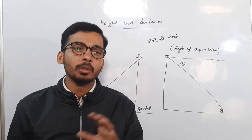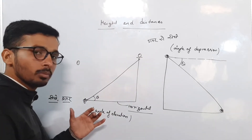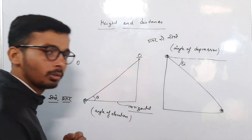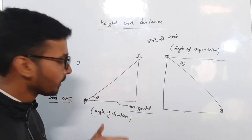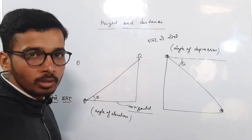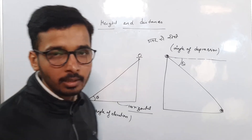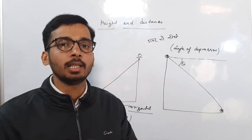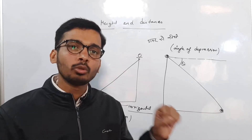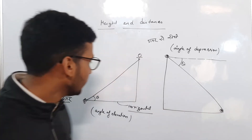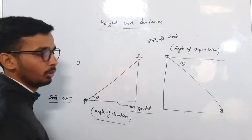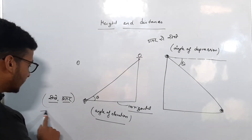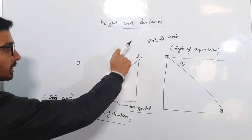If we use height and distance in real life, for example with a high-rise building, it is difficult to measure it normally. We can't measure it in a normal way, so we use trigonometry — height and distance — to measure the height of buildings. This is the concept of height and distance: understanding the height of a building or the width of a river using angle of elevation and angle of depression.